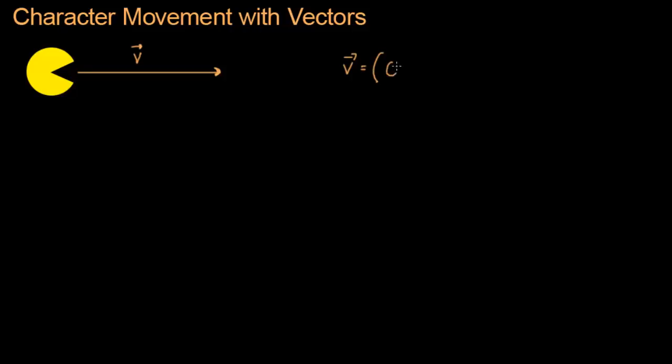In this case, Pac-Man is going right, but he could also go up or left or down left or any other direction. And also, a length, or it's also called a magnitude of the vector, which is how far does the vector go. So a very long vector means Pac-Man is moving very fast, and a very short vector means Pac-Man is moving very slow. Or the length could be zero, which means Pac-Man is not moving at all.